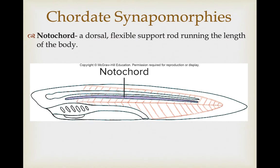Running parallel to the dorsal hollow nerve cord is a support structure called the notochord — a flexible support rod that runs the length of the body, and which we'll see is also homologous to the vertebrae in vertebrates.